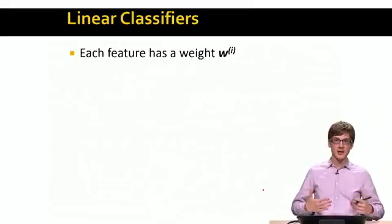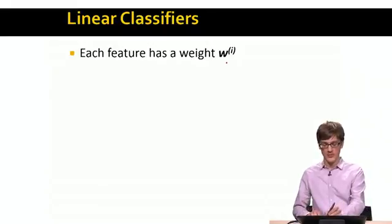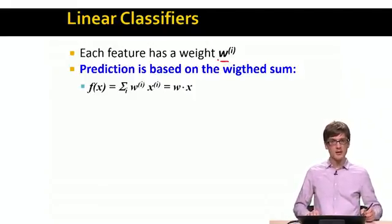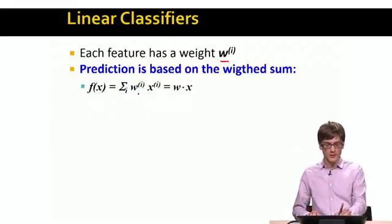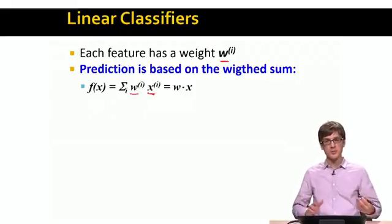So to be a bit more precise, this is an example of a linear classifier, where basically the idea is that every feature, every word in our case has a weight associated with it. And then the idea is that our prediction is based on the weighted sum of the weights of the features and the corresponding feature values.